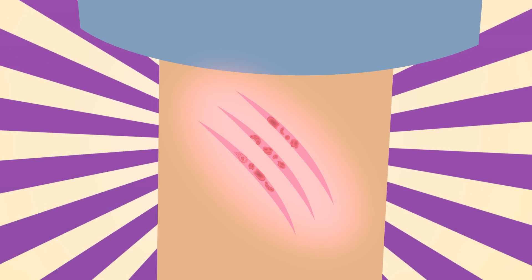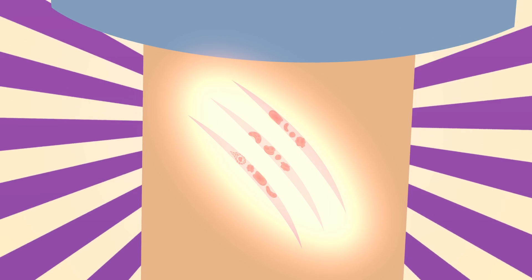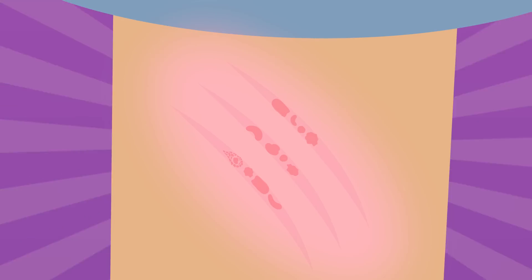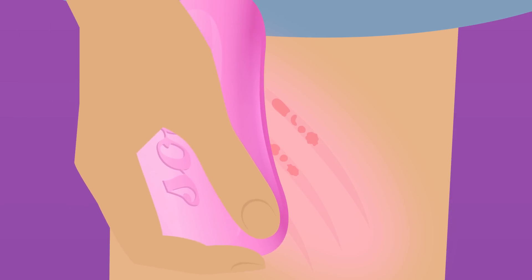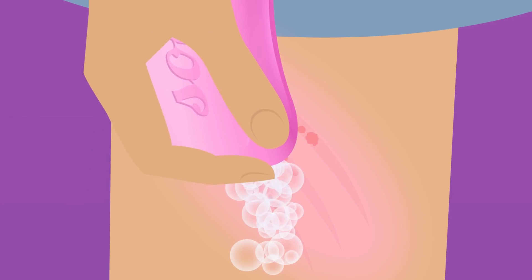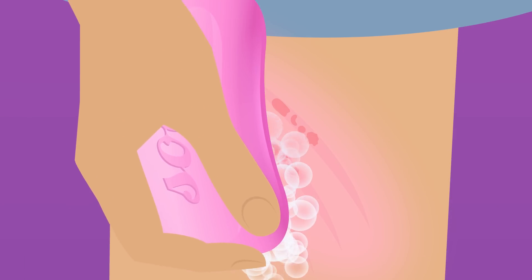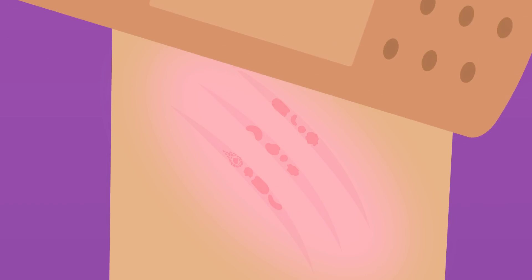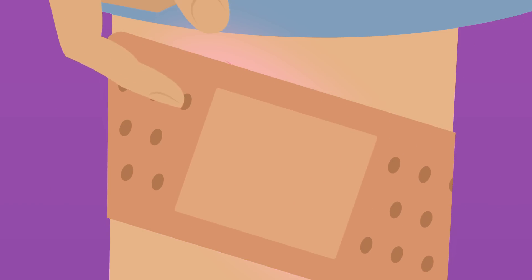Beyond just leaving the scab alone, there are a few simple ways you can help it heal even faster. For starters, wash it with soap and water. Not only will that help clean the scab, but it'll keep it from getting too dry, which is what makes it so itchy. Bandages are also a great way to keep a scab clean, covered, and away from curious fingers.